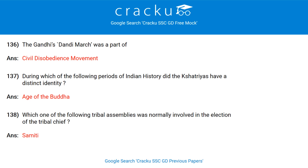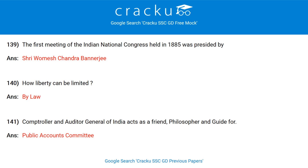A writ is issued by a High Court. Gandhi's Dandi March was a part of the Civil Disobedience Movement. During which period of Indian history did the Kshatriyas have a distinct identity? Age of the Buddha. Which tribal assembly was normally involved in the election of the tribal chief? Samiti. The first meeting of the Indian National Congress held in 1885 was presided by Shri Womesh Chandra Banerjee. How can liberty be limited? By law.